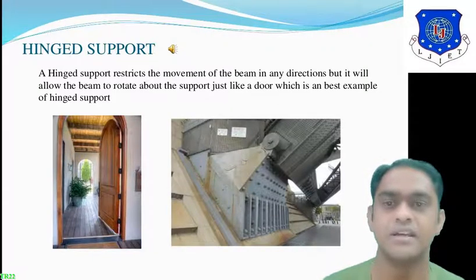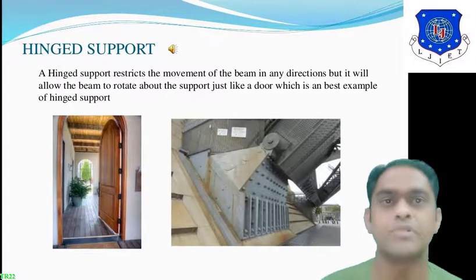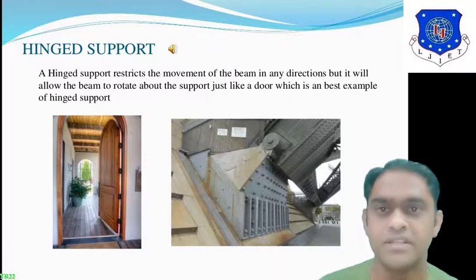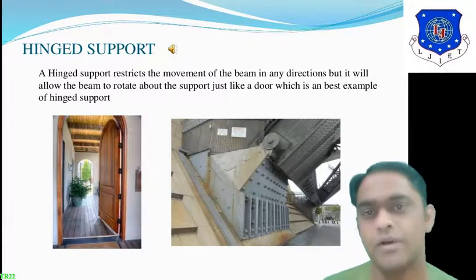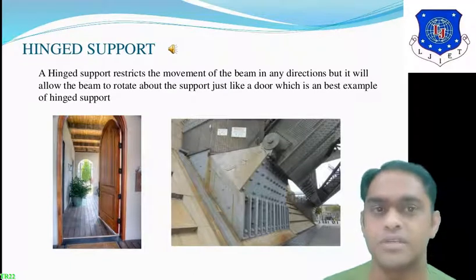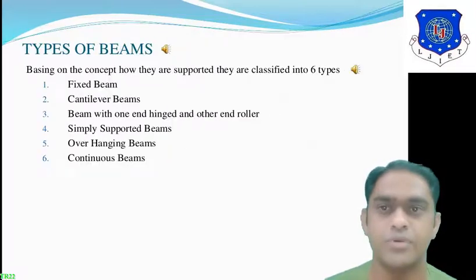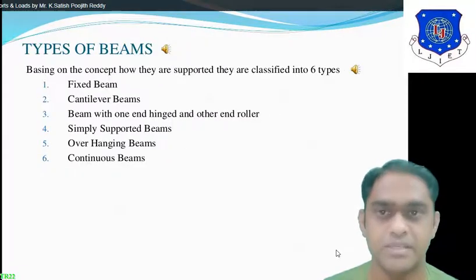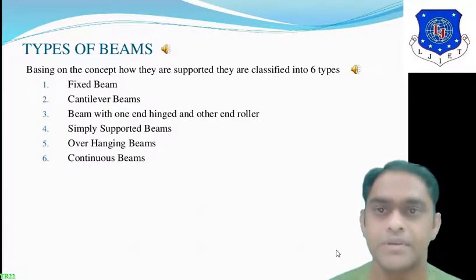Hinge support — examples include a door or a railway crossing. The hinge support restricts the movement of the beam in any direction but allows the beam to rotate about the support, just like a door, which is the best example of hinge support. So the four main types of supports are: fixed support, roller support, hinge support, and simple support.